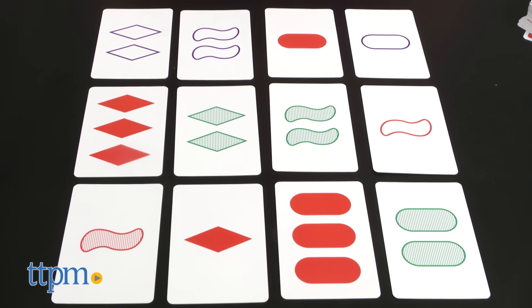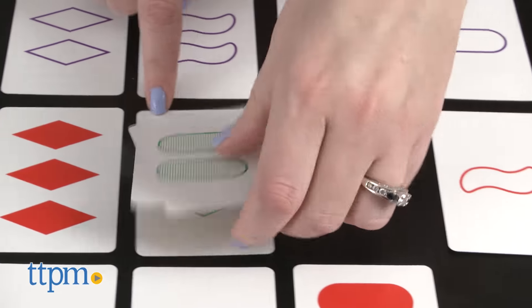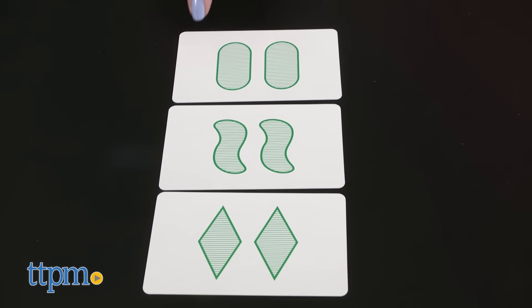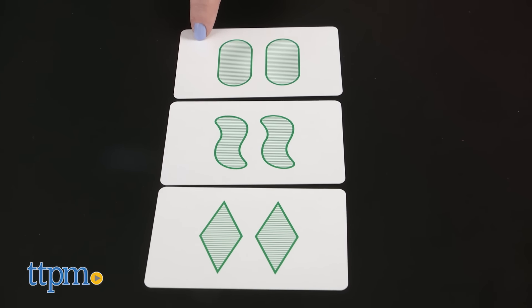Set! If a set is incorrect, you lose one point. As cards are picked up, replace them with new cards from the deck and continue playing until the deck is depleted. Each player counts up how many sets they've got, and the player with the most sets wins.